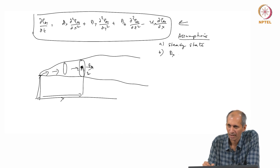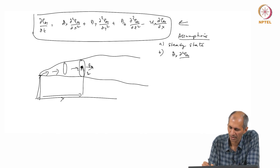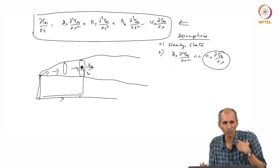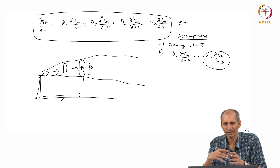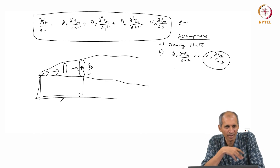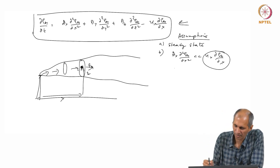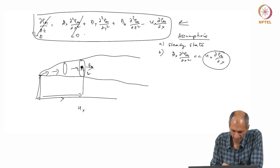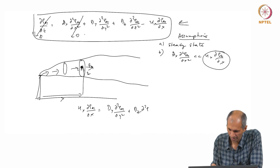When we say steady state, there is a constant flow coming in, so whatever is coming in is leaving. The concentration at a point will always be the same with reference to time. The second assumption is that d_x times d²(rho_A1)/dx² is much smaller than the contribution of u_x times d(rho_A1)/dx — the amount of spreading by x-dispersion is much smaller compared to wind transport in the x-direction. So those two terms are negligible and go to zero.